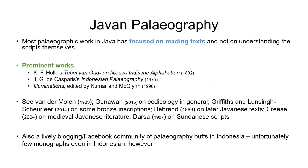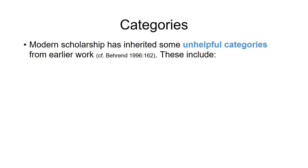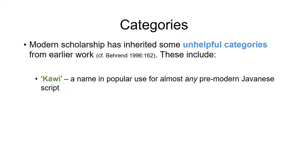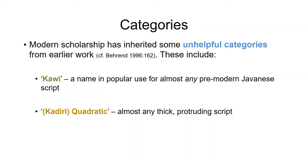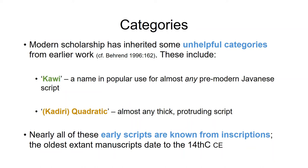Earlier scholarship has given us some unhelpful categories. Kawi used to be a specific term for an indigenized form of Pallava — the original script from South India — but now it's used for really any pre-modern Javanese script. Blocky scripts are often called Quadrati, sometimes Kaduri Quadrati, Kaduri being the East Javanese kingdom that dominated the island between 1049 and 1222. Nearly all the scripts I'll show are from inscriptions, as the very oldest manuscripts in Indonesia date to the 14th century — we have maybe a handful.